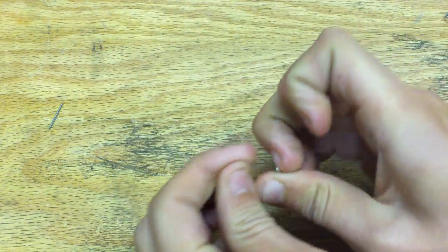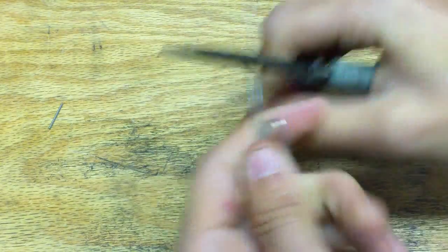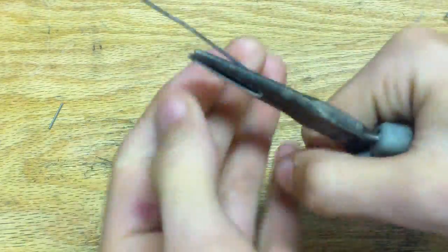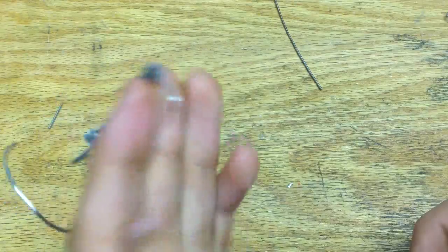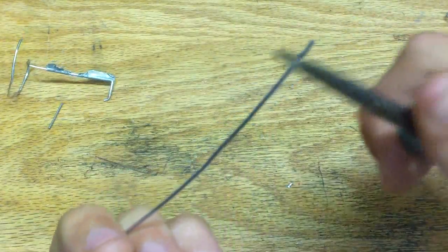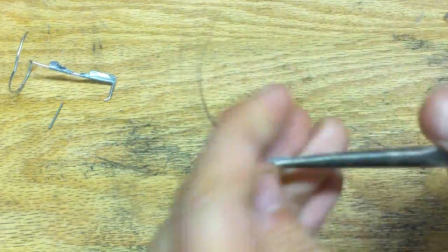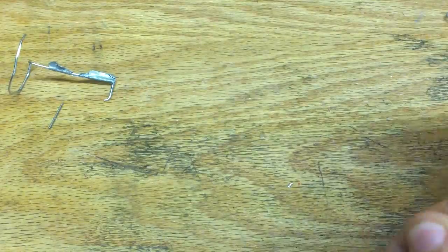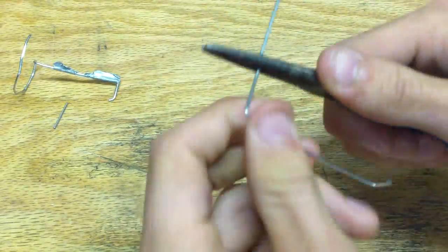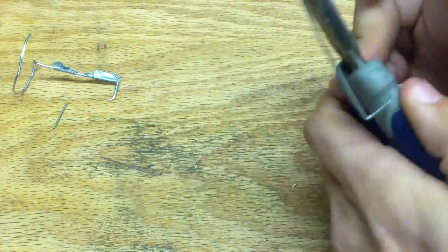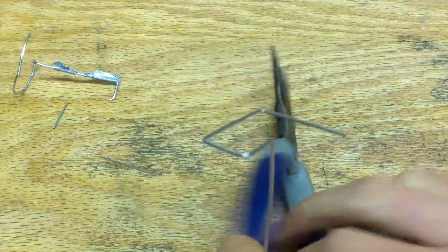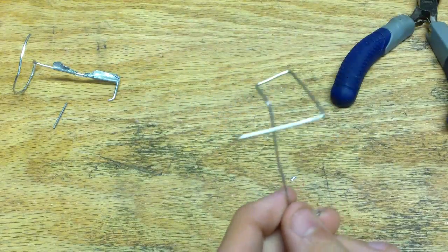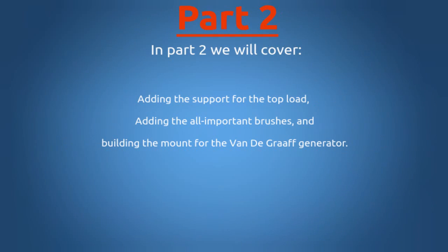Next, take a paper clip and unbend it just like we did before. After you're done bending it, it should look like this. This is what it should look like when you're done. This is going to be the supporting piece for our top dome.